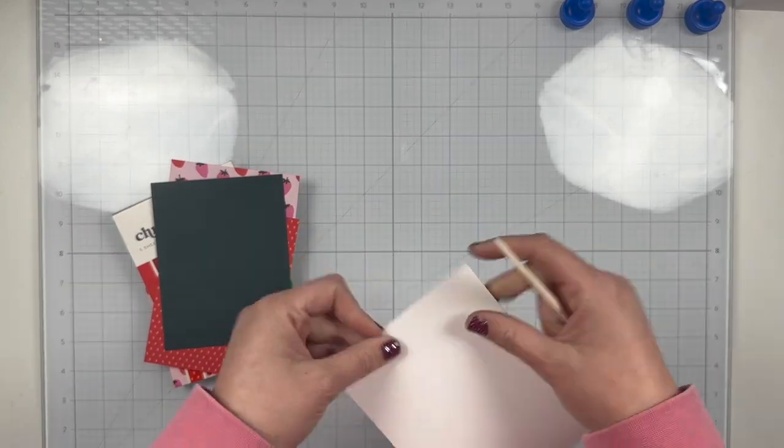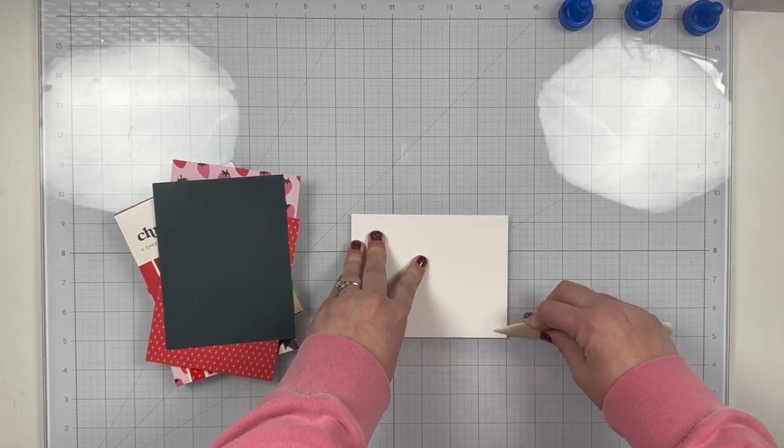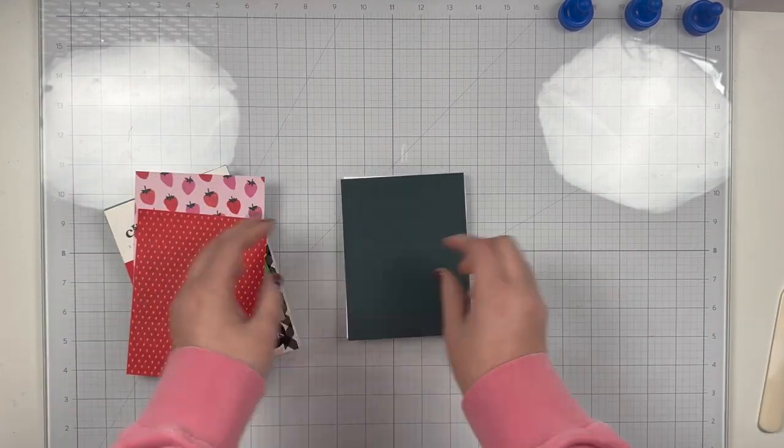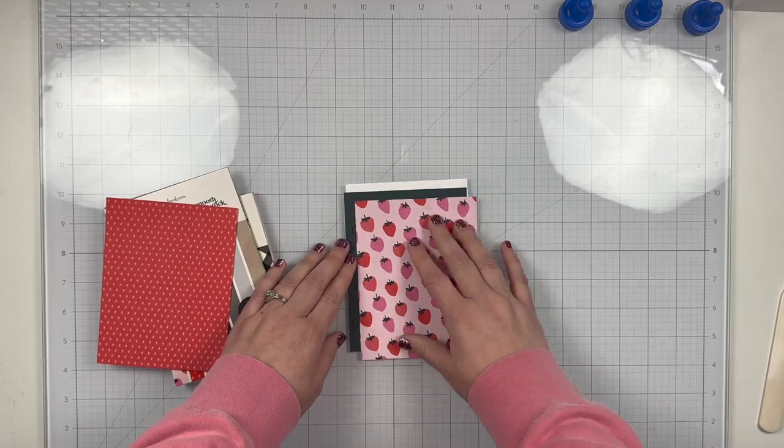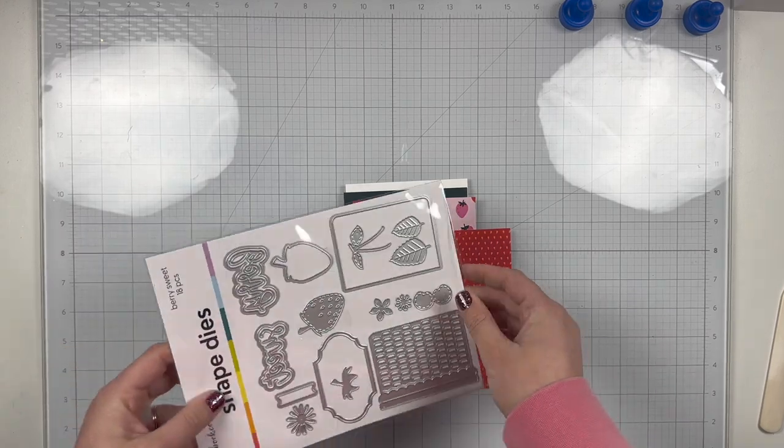I have my card base ready. This is a top folding A2 card base using Nina's ultra thick 110, I think, or 100 pound cardstock. I have it linked in my basic supplies if you want to see what I use.